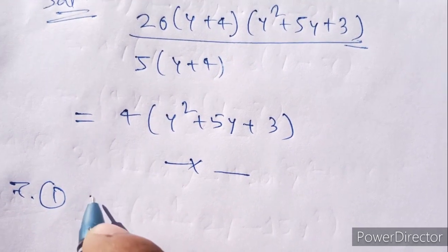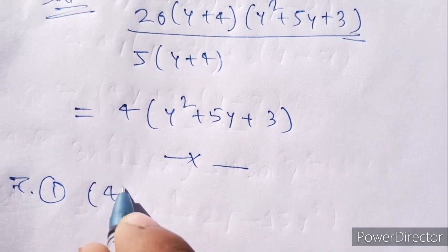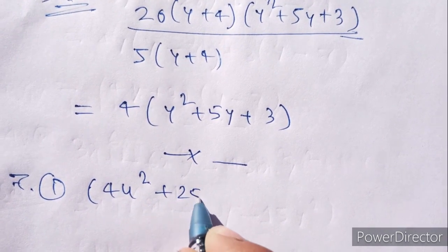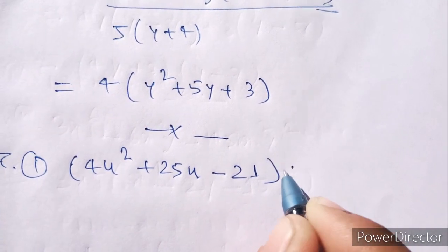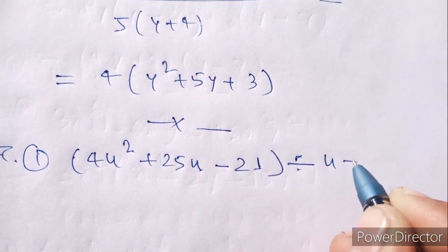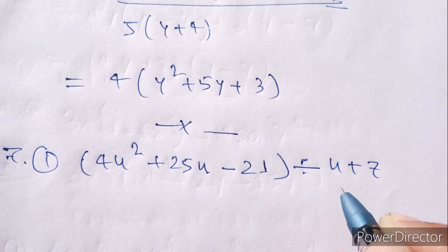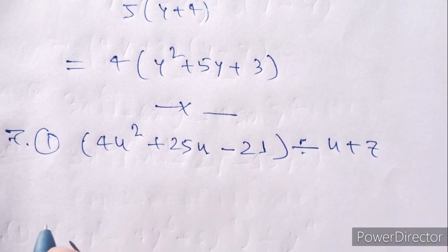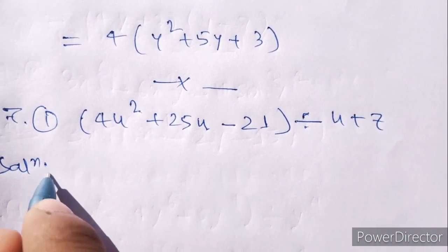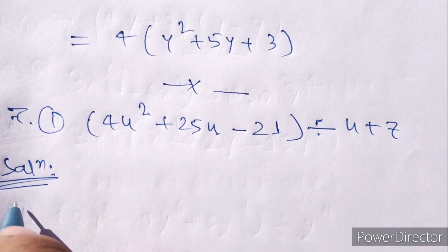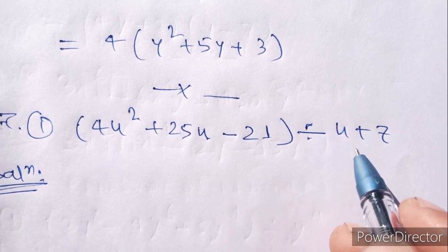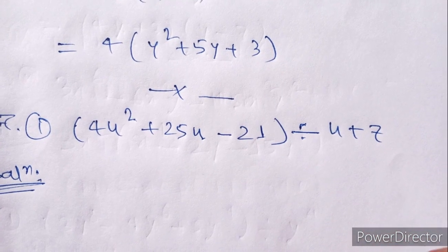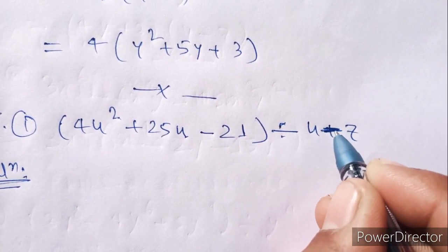Now problem 1: 4u² plus 25u minus 21 divided by u plus 7. Solution: I'll take u minus 7 to avoid mistakes.